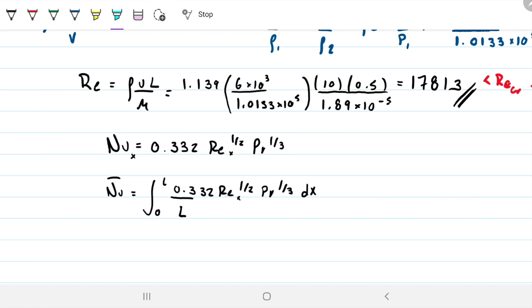You can run this integration for yourselves. What you need to do is sub in density times velocity times x over viscosity. All the constants will come out. We'll be integrating x to the half by dx. Our conclusion to this is that this equals two times our local Nusselt. So if we want the average Nusselt, it's just two times this equation, which is 0.664 Reynolds^0.5 Prandtl^(1/3).